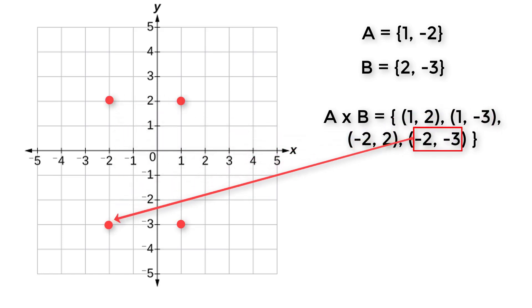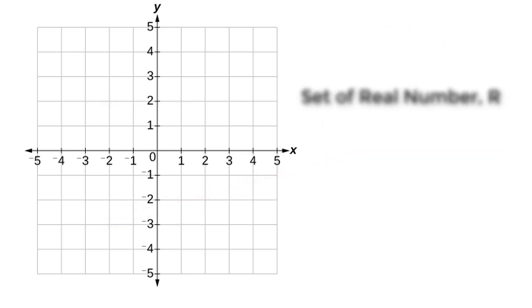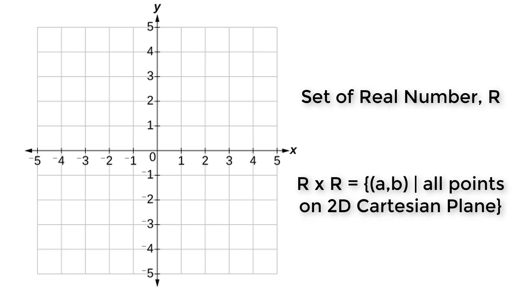(-2,-3) point is here. Let's focus on set of real numbers. I believe you remember that set of real numbers is the set of natural numbers, integers, rational and irrational numbers.